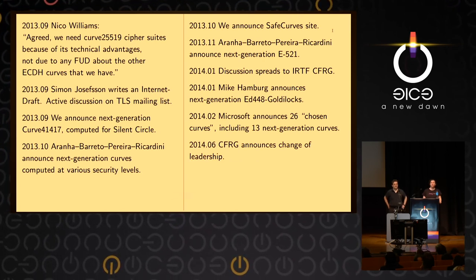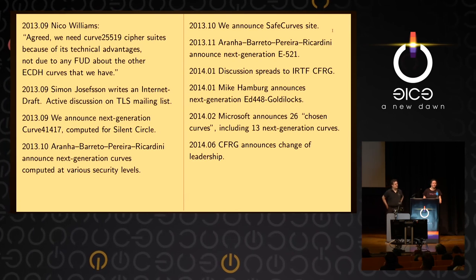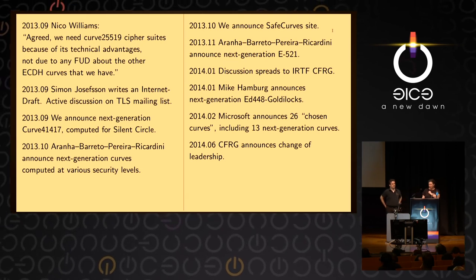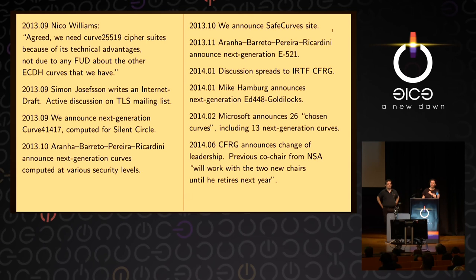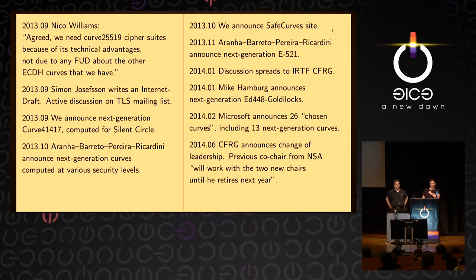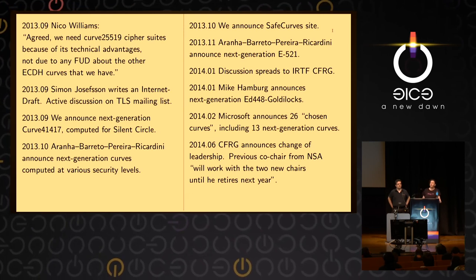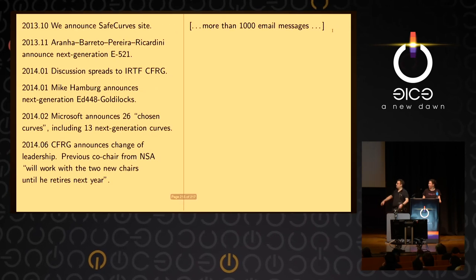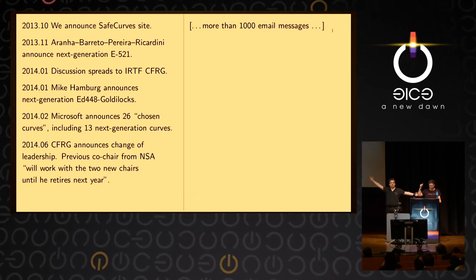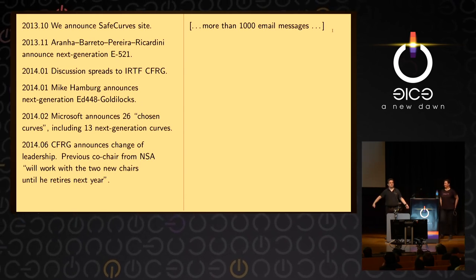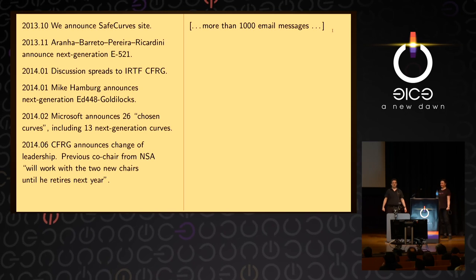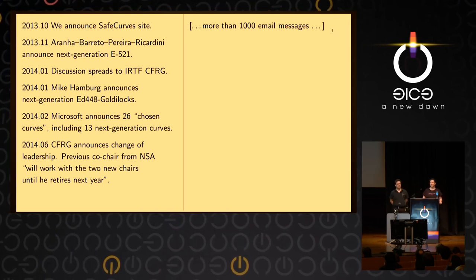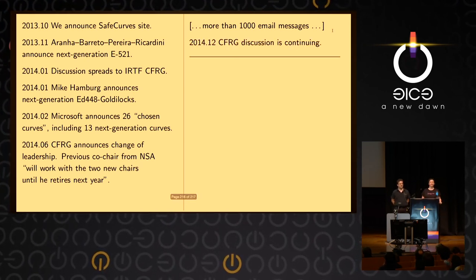The CFRG — the crypto research working group from the IETF — is moving on, though there was an NSA co-chair who will still be there to advise them. The hope was to finish on a happy note saying it's all good — Microsoft has chosen curves, so once Microsoft stepped in, that's the end of the discussion. But the discussion continues. Thank you for your attention.